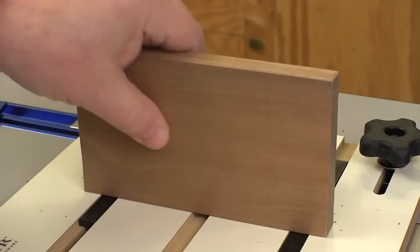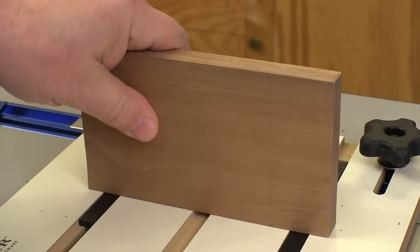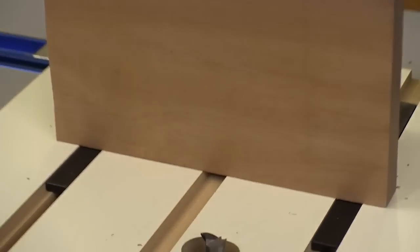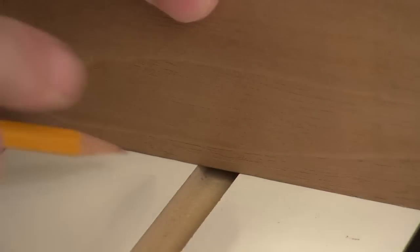To control tear out on the back side of the workpiece we need to make a sacrificial fence face. We need to start with the key removed and the face in its position against the fence. Then we want to mark on the sacrificial face where that slot is that the key goes in.